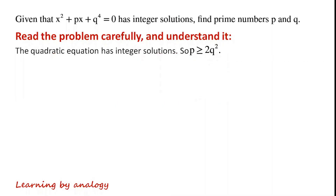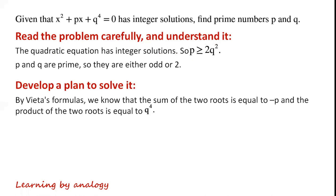The quadratic equation has integer solutions, so p is greater than or equal to 2q squared. p and q are prime, so they are either odd or 2. By Vieta's formulas, we know that the sum of the two roots is equal to minus p, and the product of the two roots is equal to q to the power of 4.